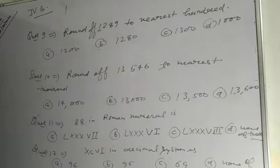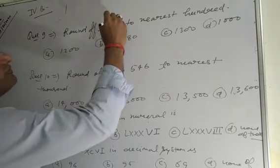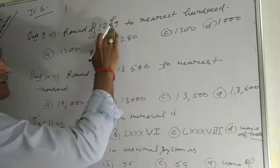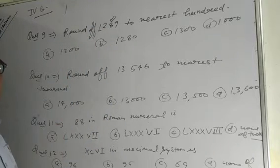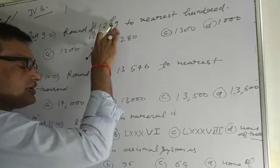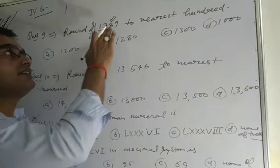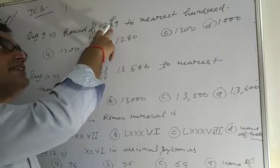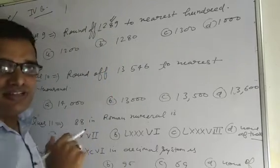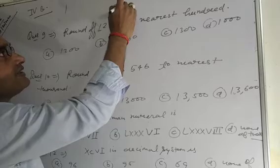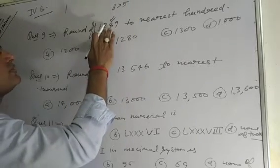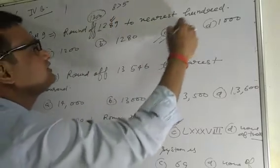Question number 9. Round off 1,289 to the nearest 100. When we round off any number to the nearest 100, we first check the tens place digit. If the tens place digit is 5 or greater than 5, we add 1 to the hundreds place digit. Here the tens digit is 8, which is greater than 5, so we add 1 to 2 and get 1,300. Therefore, option C is the correct answer.